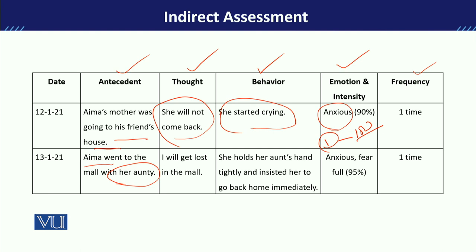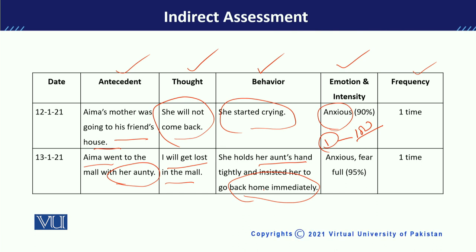Her behavior was that she held her aunt's hand very tightly and kept insisting that they should go back home immediately. As a result, the emotions she reported were anxious as well as fearful — she was very frightened during that period.